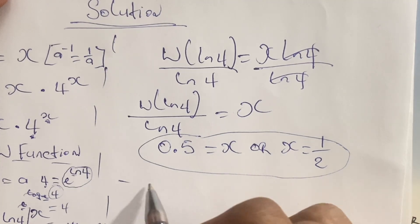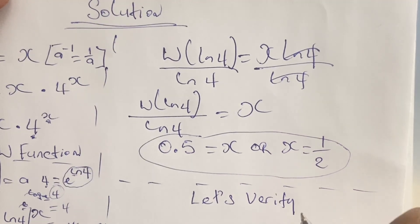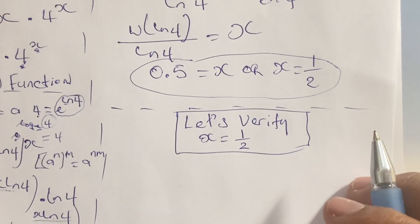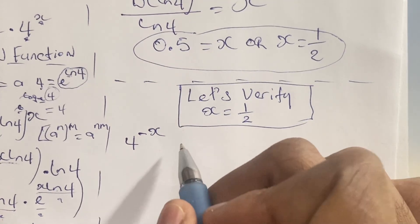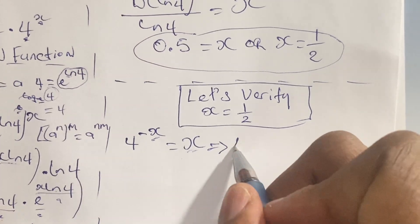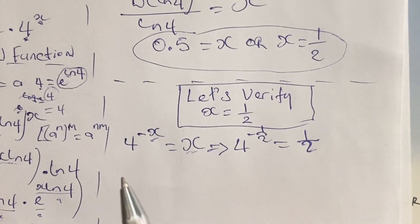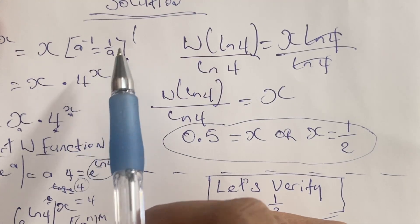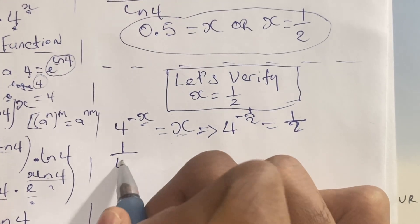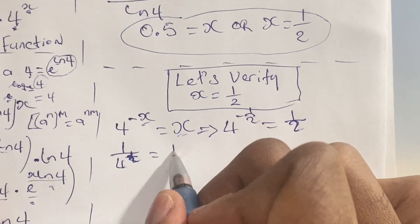Now we can verify this solution. We said that x is equal to 0.5 or one half, and we'll use one half for this exercise. We rewrite our original equation: 4 to the power of negative x is equal to x. Since x is equal to one half, we substitute: 4 to the power of negative one half is equal to one half. Applying our law of indices again, we rewrite this as 1 over 4 to the power of one half, which should equal one half.